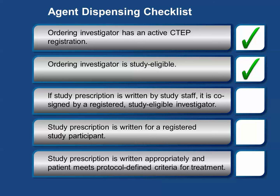The agent dispensing checklist must be complete prior to dispensing study agent. We've verified that the ordering investigator has an active CTEP registration, is study eligible, and checked that the study prescription is signed or co-signed by the registered study eligible investigator. Ensure that the prescription is written for a registered study participant at either a control or satellite dispensing area, that it is written appropriately per protocol, and that the patient meets all protocol defined criteria for treatment.